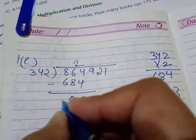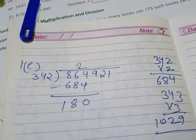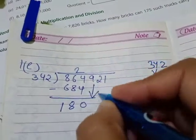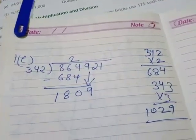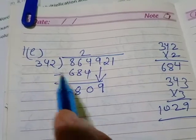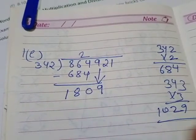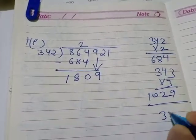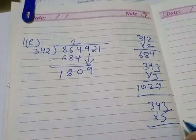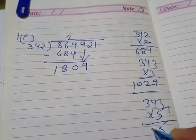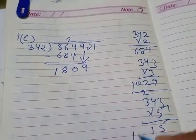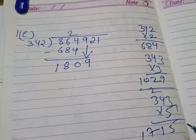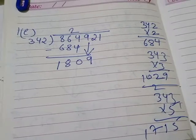Okay, now we will note down this 9 here. Now we will see that in the table of 342 that 1809 is coming how many times. So we will try 342 into 5, we will try 5: 3s are 15, 5 4s are 21, 5 3s are 15 plus 2 is 17. We will get 1715.